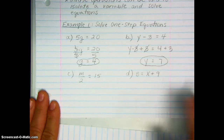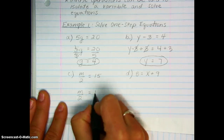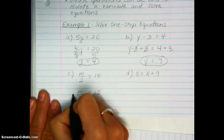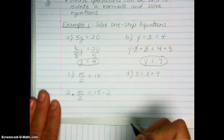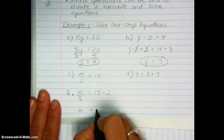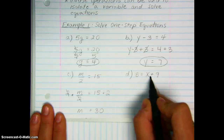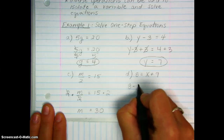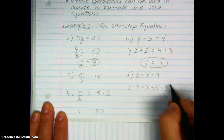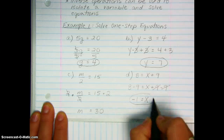For the next two: here, m is being divided by two, so to undo that and isolate the variable, we do the opposite — multiply both sides of the equation by two. These cancel, leaving m equal to 30. And finally, nine is being added to x, so the opposite is subtracting. We take both sides and subtract nine. This cancels, leaving x by itself, equal to eight minus nine, which is negative one.